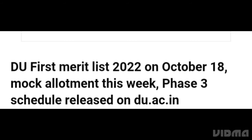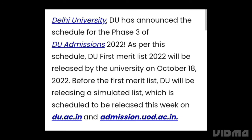Delhi University's first merit list 2022 is on October 8th, with mock allotment results releasing this week as part of Phase 3. Delhi University has announced the schedule for Phase 3 of DU admissions 2022. The DU first merit list 2022 will be released on October 8th. Before the merit list, DU will be releasing the simulated list, which is scheduled to be released this week.